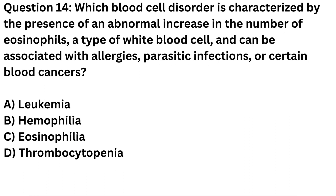Question 14. Which blood cell disorder is characterized by the presence of an abnormal increase in the number of eosinophils, a type of white blood cell, and can be associated with allergies, parasitic infections, or certain blood cancers? A. Leukemia. B. Hemophilia. C. Eosinophilia. D. Thrombocytopenia.